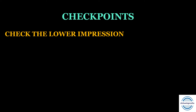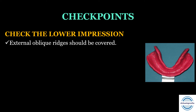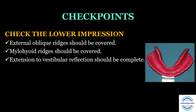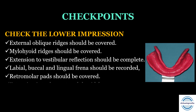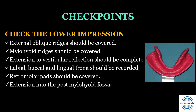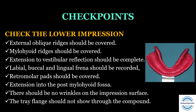Checkpoints for the lower impression: external oblique ridges should be covered, mylohyoid ridges should be covered, extension should reach the vestibular reflection with complete flanges that are not short. Labial, buccal, and lingual frenums should be recorded as notches. Retromolar pads should be covered, and there should be extension into the posterior mylohyoid fossa so the distal lingual flange is nicely recorded. There should be no wrinkles on the impression surface, and the tray flanges should not show through the compound.